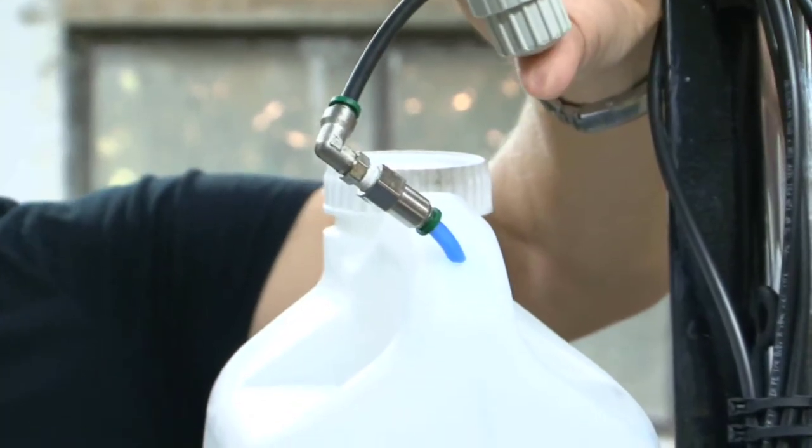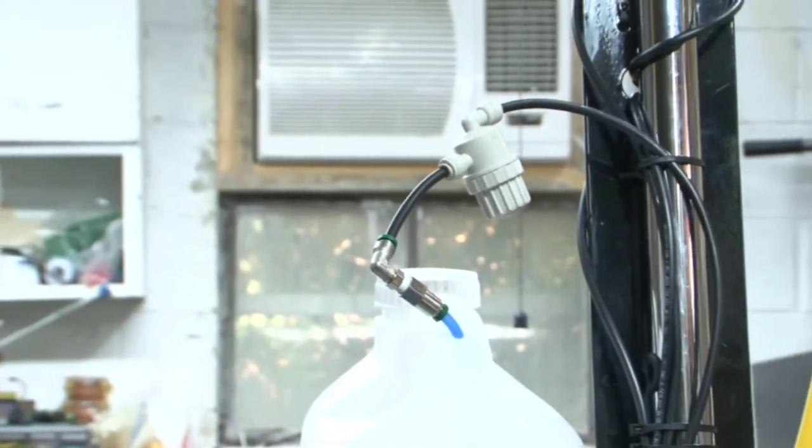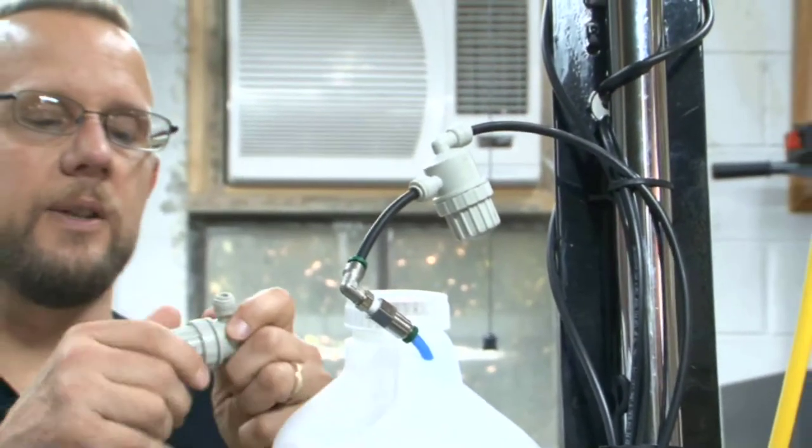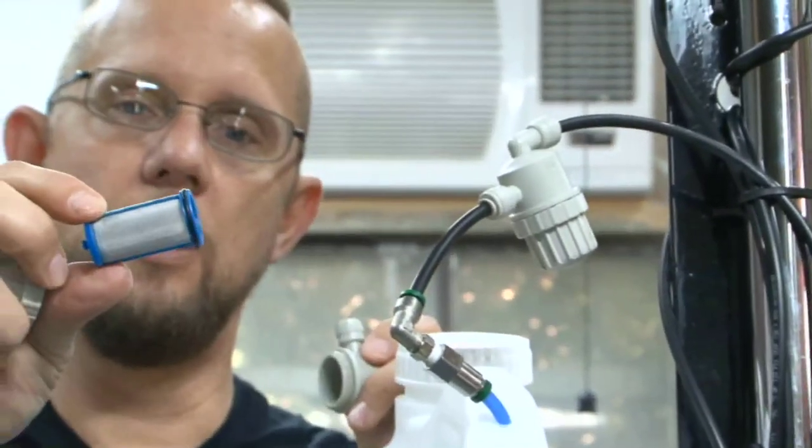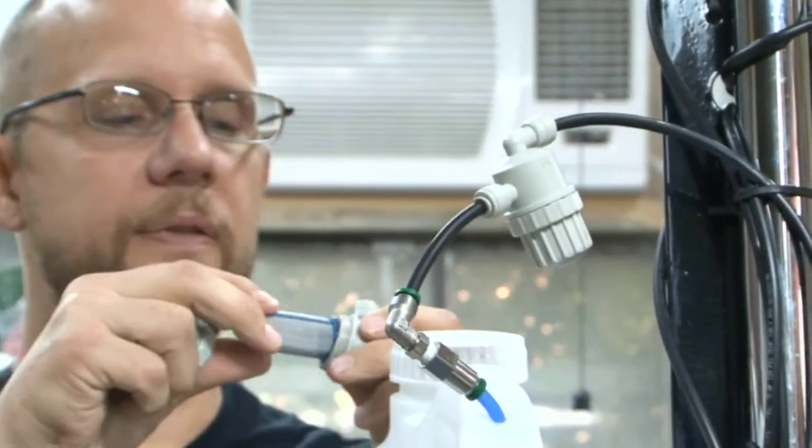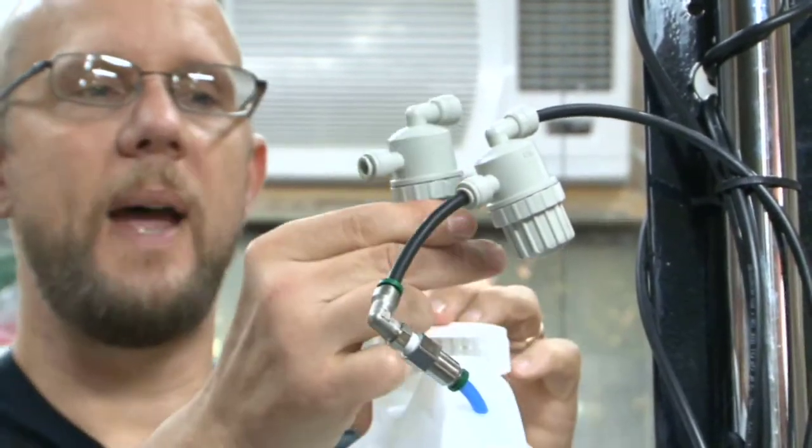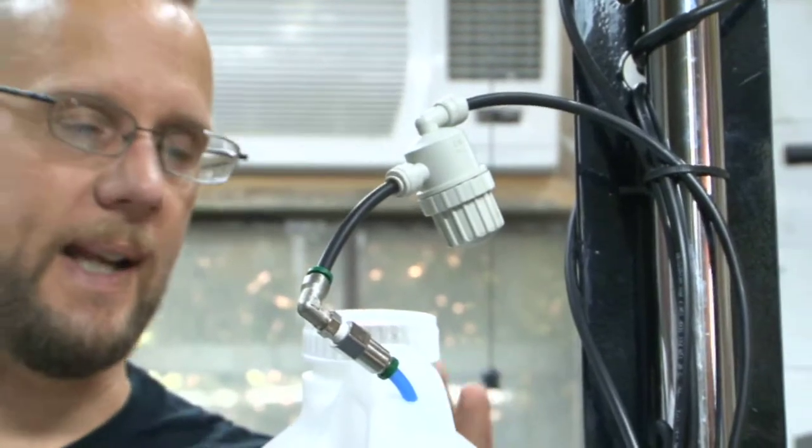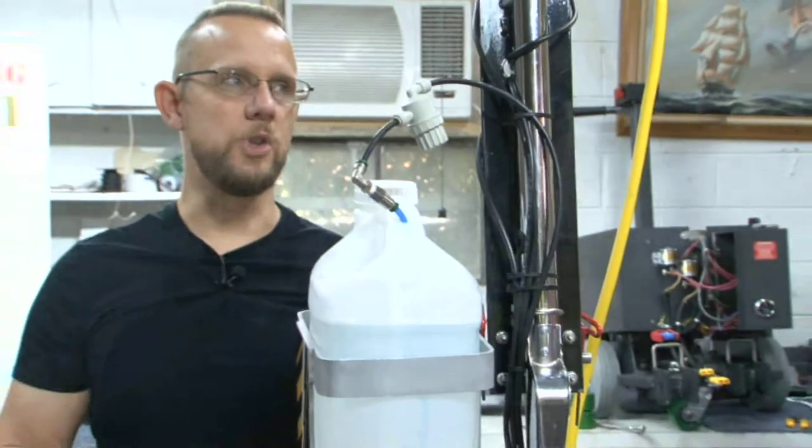This also comes with an inline filter strainer. For maintenance and care, unscrew the ball, pull out the stainless steel insert, clean that off, put it back in, and pop it back in line. That keeps your pump clean and prevents clogs and downtime with your machine.